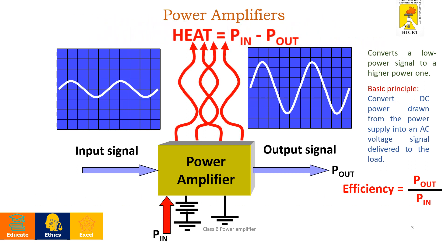P in is the input signal and P out is the output signal. Since it is a power amplifier, there will definitely be heat dissipated from it, which is given by the expression P in minus P out. The main aim is to construct a power amplifier such that its efficiency is high and the heat is minimal.